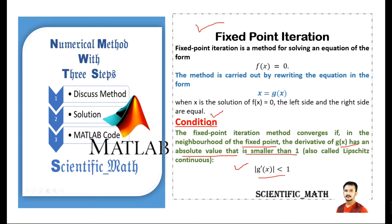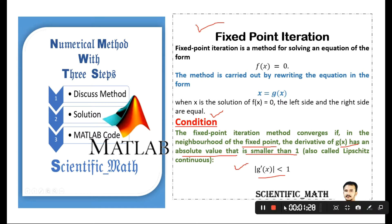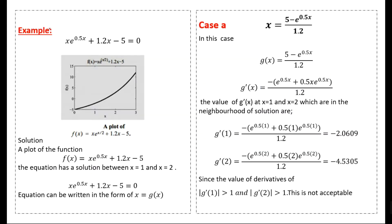We will see this with the help of an example. Consider the equation x·e^(0.5x) + 1.2x − 5 = 0.